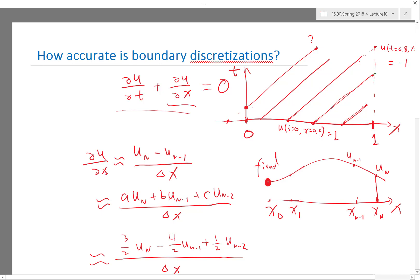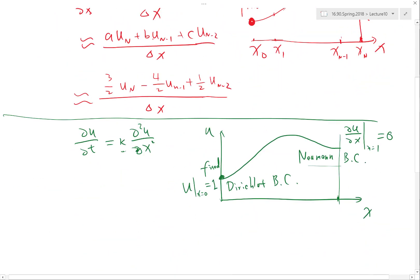All right. So inside the boundary layer, because the velocity changes so much so rapidly, this term actually, the second-order derivative starts to be as important as the first-order derivative terms. And inside the boundary layer, you don't talk about characteristics.